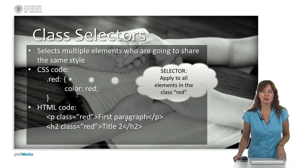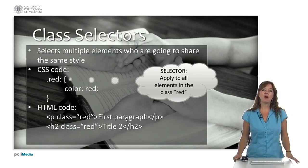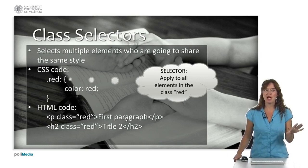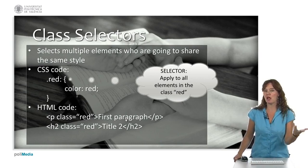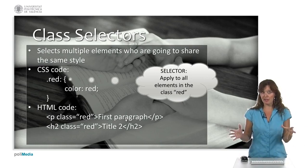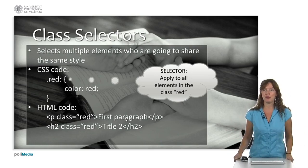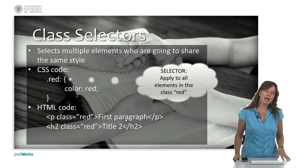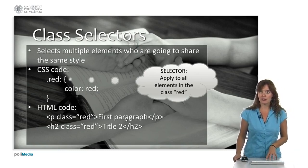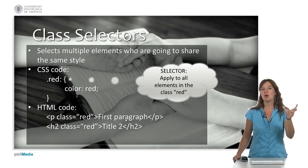In the HTML code, we mark a paragraph with the class 'red' to give it the same style as all elements of that class, and effectively the text in that paragraph will be red. So these are three ways to define selectors in CSS and assign property-value pairs to them.